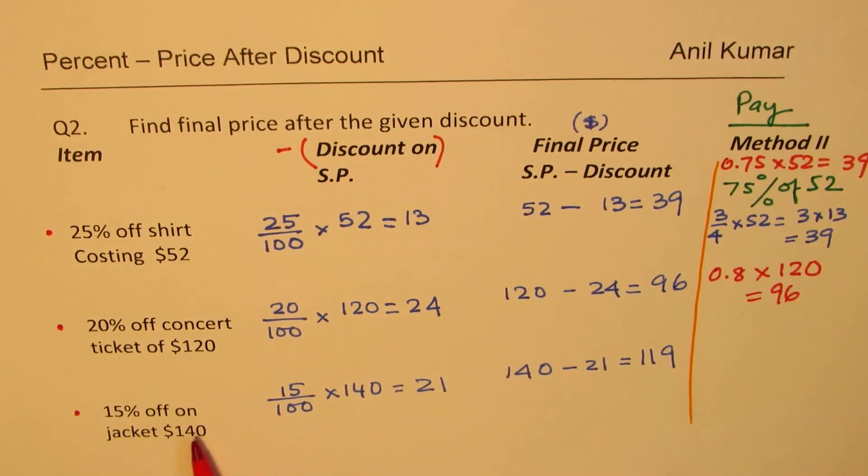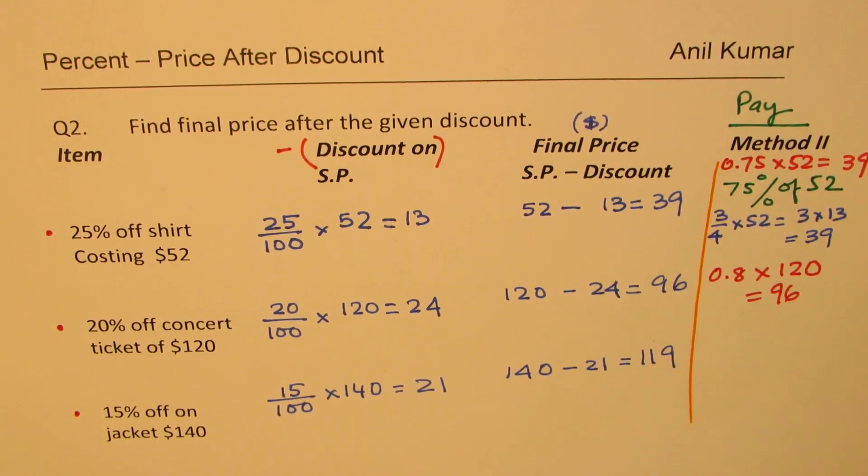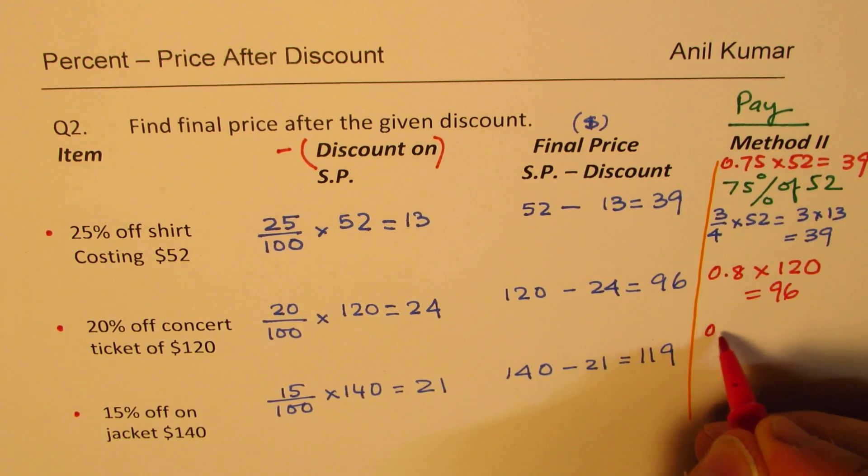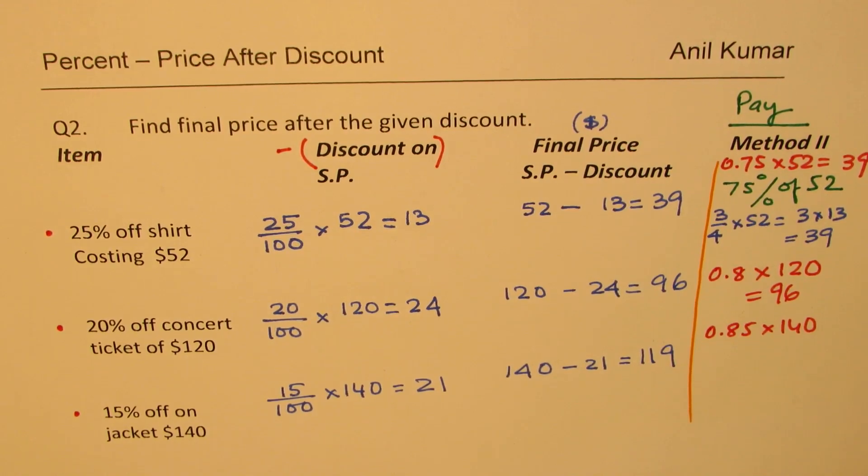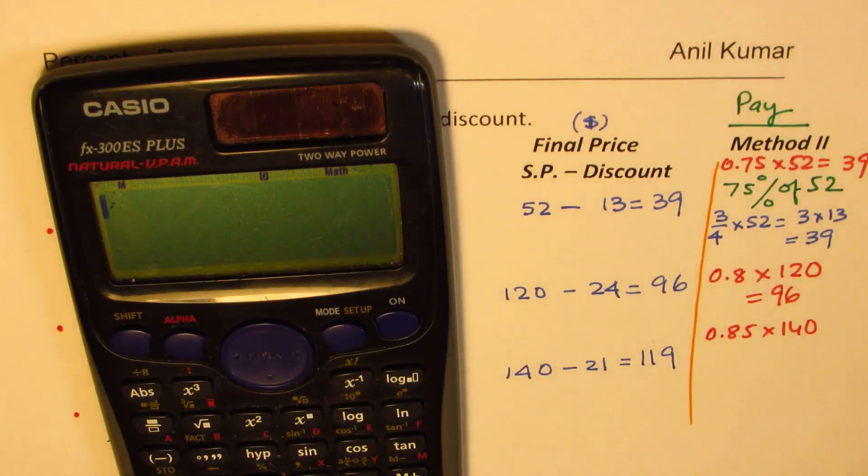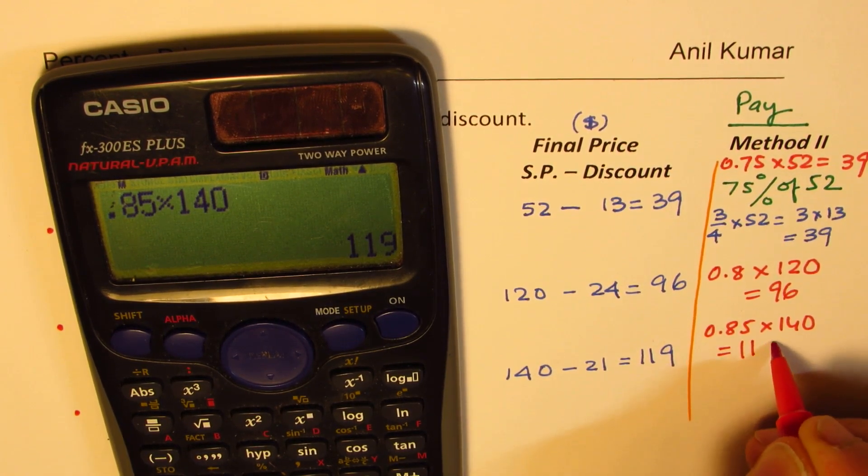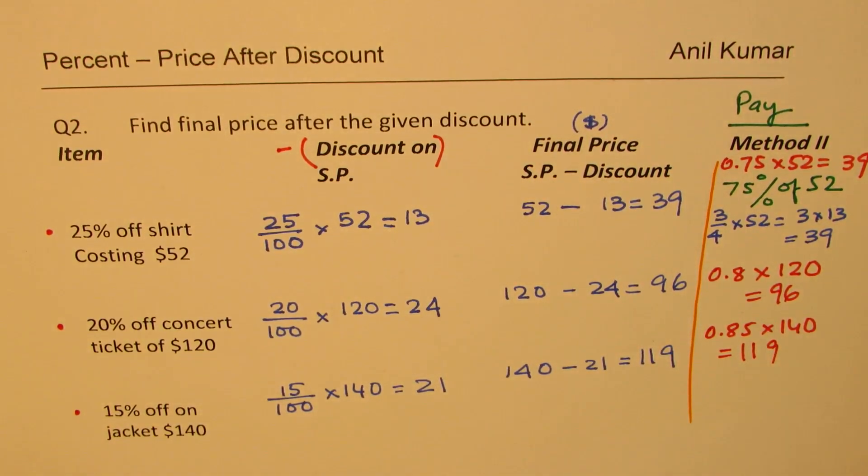15% off jacket. So, you are paying how much? You are paying 85%. So, you could do 85% means 0.85 times 140. This is one way of doing it. I can show you a shorter way also. Let's do this first. 0.85, 140. Even with using calculator, it is faster to calculate this way.